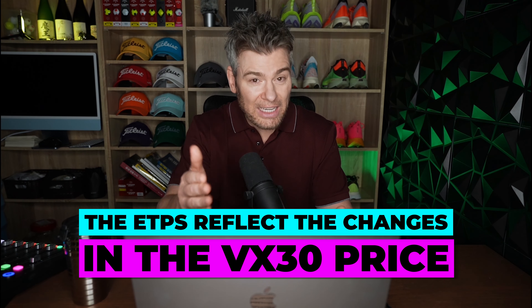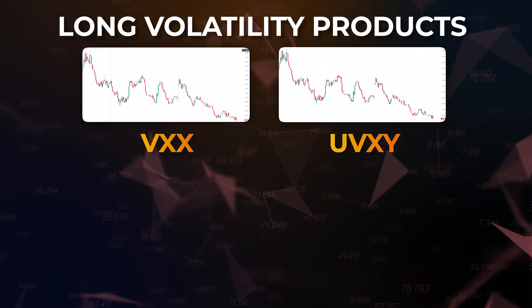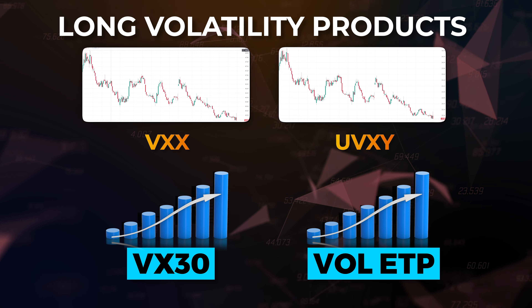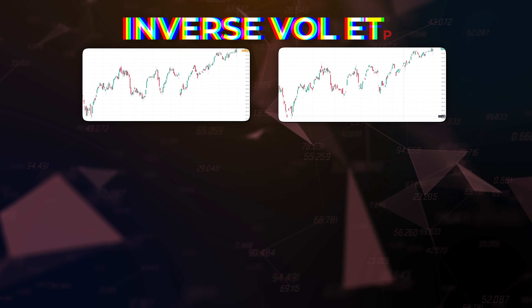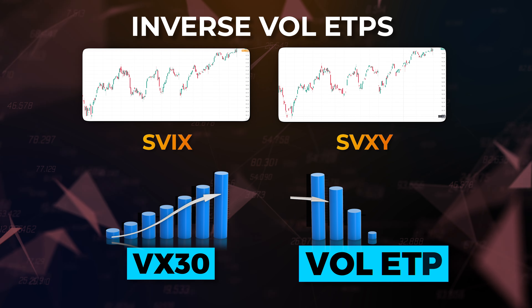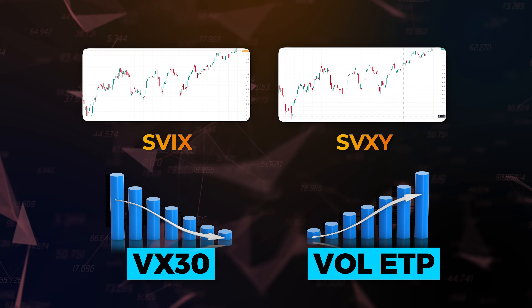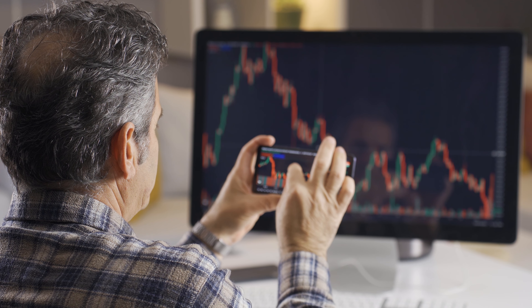Here's the punchline — this is what you need to know. Whatever direction that VX30 price goes, that's the direction the volatility ETPs will go as well. For the long volatility products, if VX30 goes up, they will also go up in price. If VX30 goes down, they will decay in value over time. For the inverse — the short volatility products — it's the opposite: if VX30 goes up, those ETPs go down, and if VX30 goes down, those ETPs go up in price. So you can see the VX30, the combination of M1 and M2 VIX futures, is extremely important.